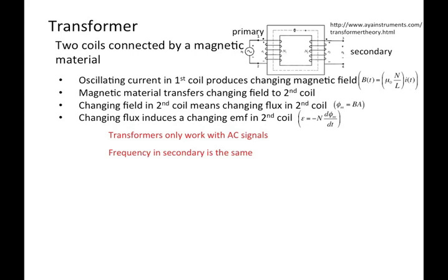The second key point is the frequency of the primary. Whatever frequency you put in the primary coil is the frequency on the secondary coil, because that frequency is going to be related to the change in flux, which is going to produce the changing EMF.